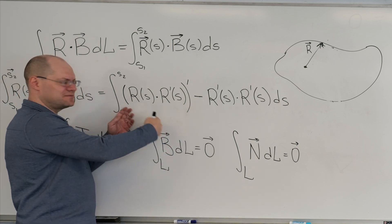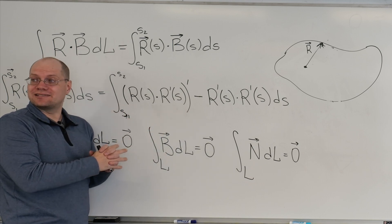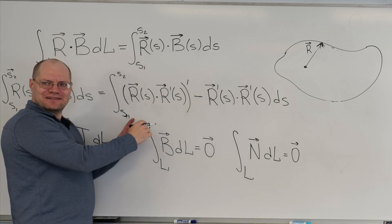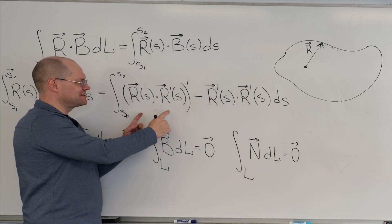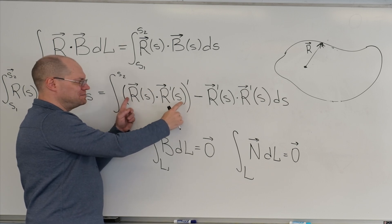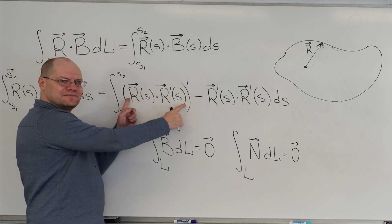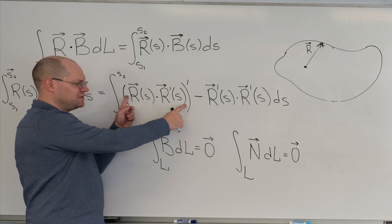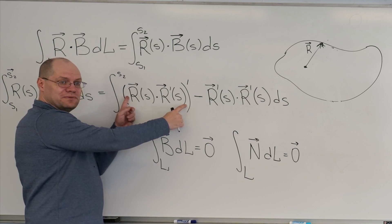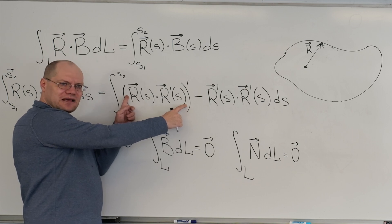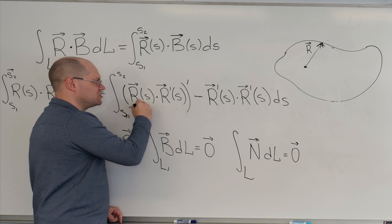Because this is a full derivative by the fundamental theorem of calculus. This integral of this term will just be this value at the end minus this value at the beginning. And because the curve is closed, the value of this expression will be the same at the end as it is at the beginning. And so this part equals zero. So it truly drops out.